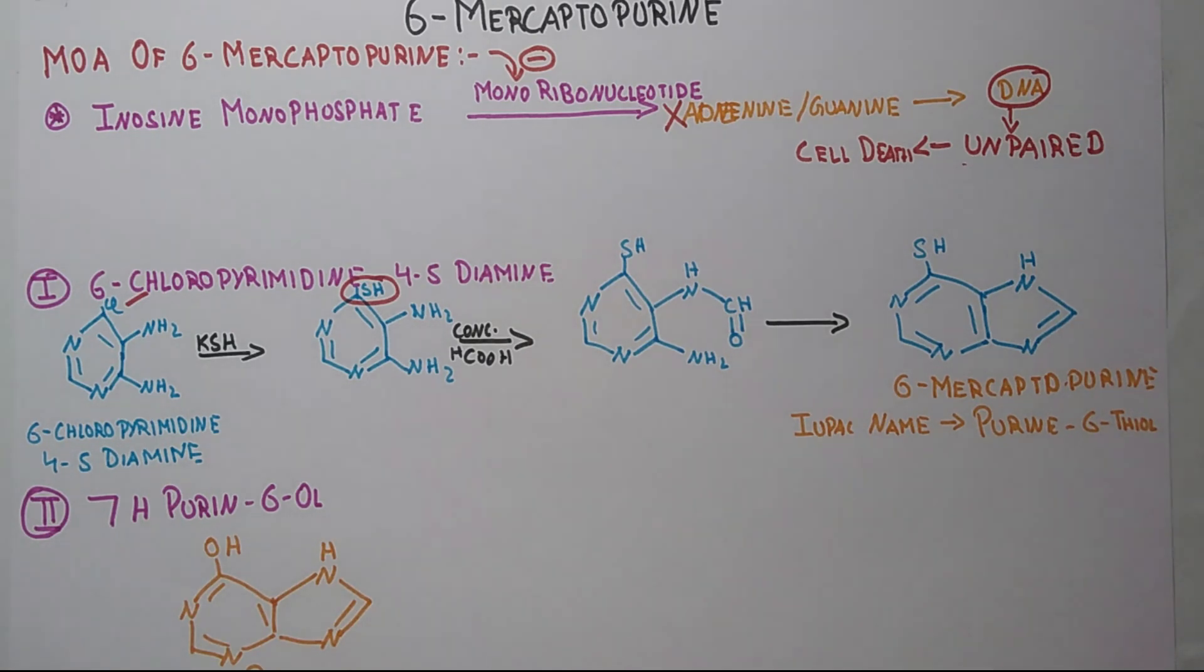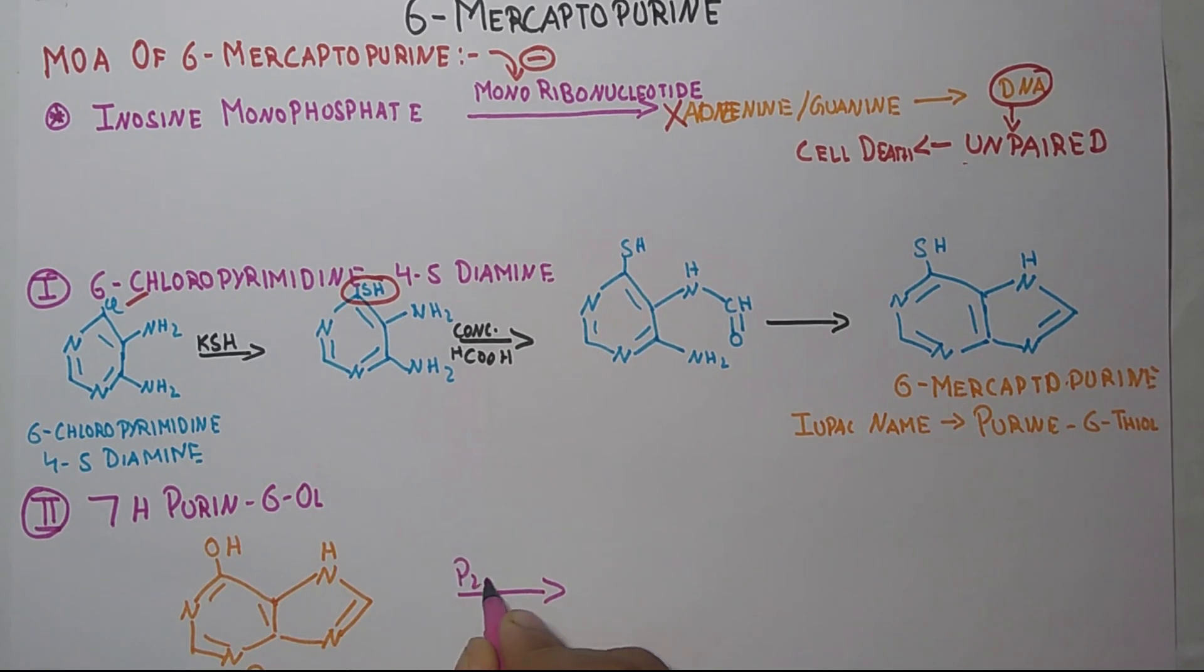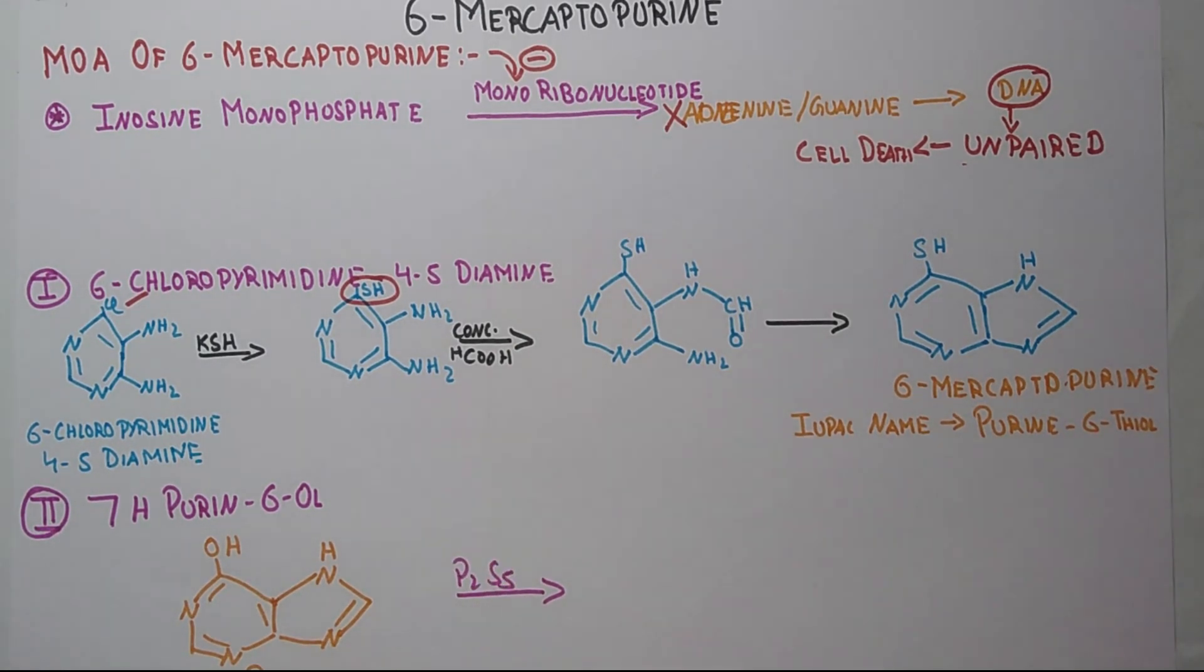Now in presence of P2S5, there will be the formation of 6-mercaptopurine. Yes students, it is a very simple synthesis. I hope you like that. So this is the formation of 6-mercaptopurine.